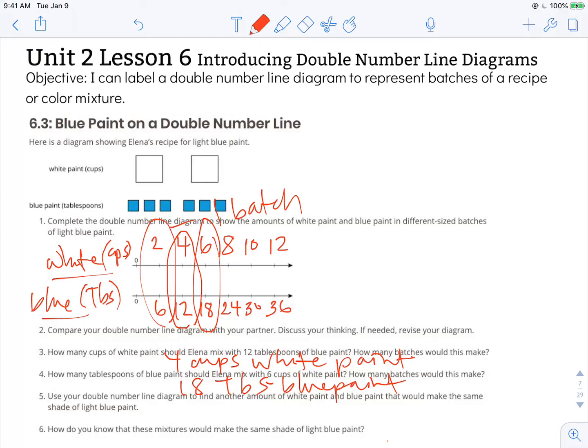Number five says use your double number line diagram to find another amount of white paint and blue paint that would make the same shade of light blue paint. So as long as I follow the same recipe and I double or triple or quadruple at the same rate, so changing the white paint just like I would change the blue paint, then I could make any size batch that I want.